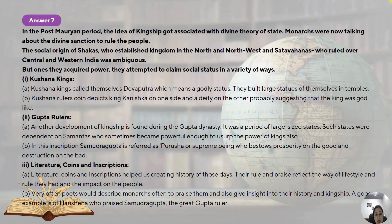Another development of kingship is found during the Gupta dynasty. It was a period of large-sized states dependent on samantas, who sometimes became powerful enough to usurp the power of the king. In the Allahabad inscription, Samudragupta is referred to as Purush, or supreme being, who bestows prosperity on the good and destruction on the bad. The Gupta rulers wrote down inscriptions to show the qualities and power of the king. Literature, coins and inscriptions helped in creating history of those days. A good example is Harisena, who praised Samudragupta in a prashasti on the Allahabad pillar, also known as the Prayag Prashasti.